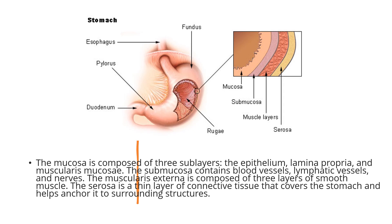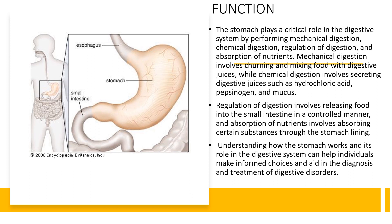The serosa helps anchor the stomach to the surrounding structures. Overall, the structure of the stomach and its different layers and cell types are crucial for its digestive functions. Understanding the anatomy of the stomach is an important foundation for learning about its role in the digestive system. Now we'll be talking about the functions of the stomach.